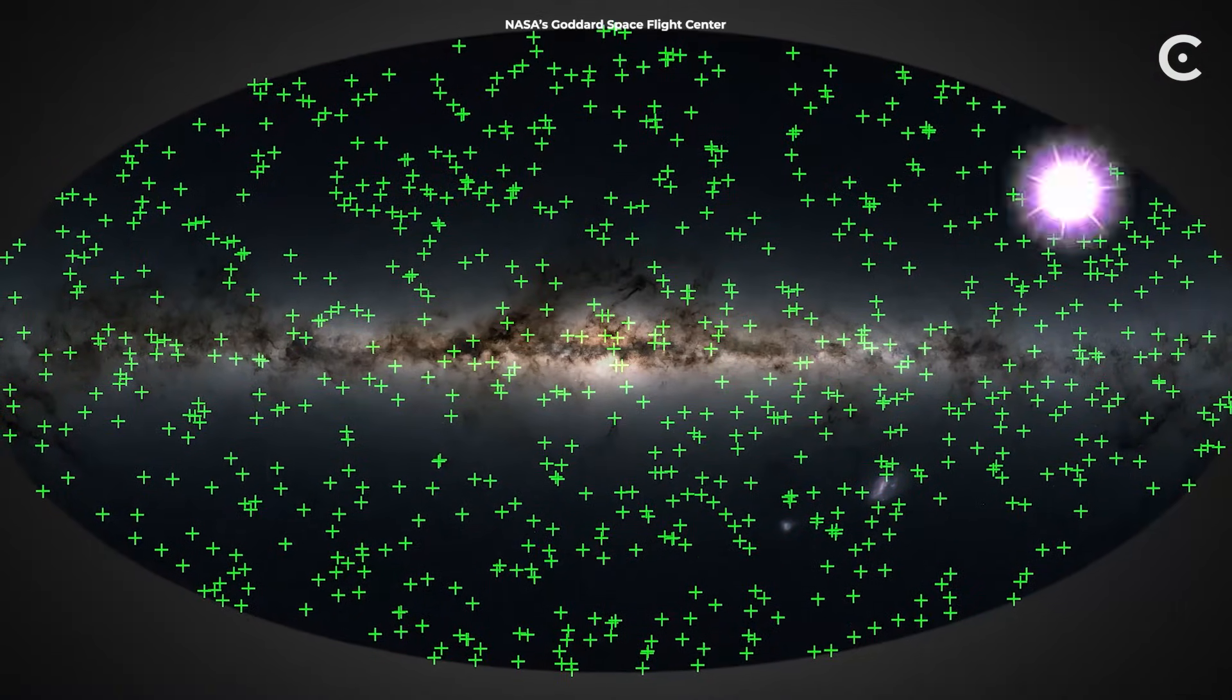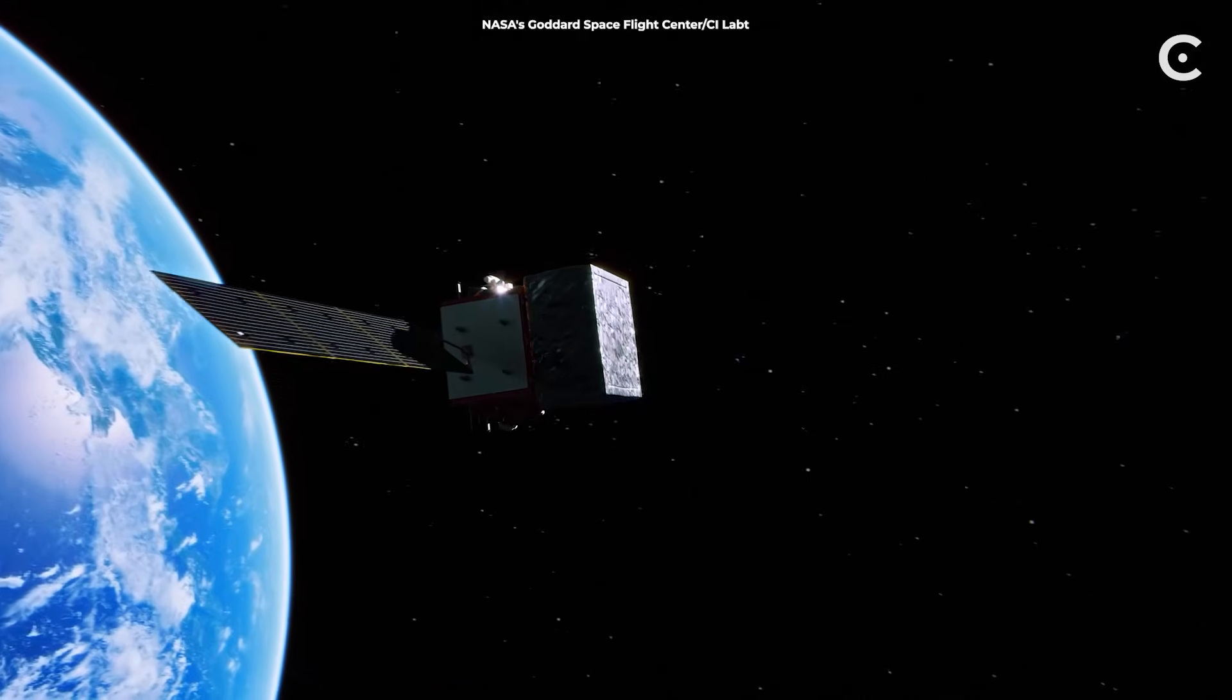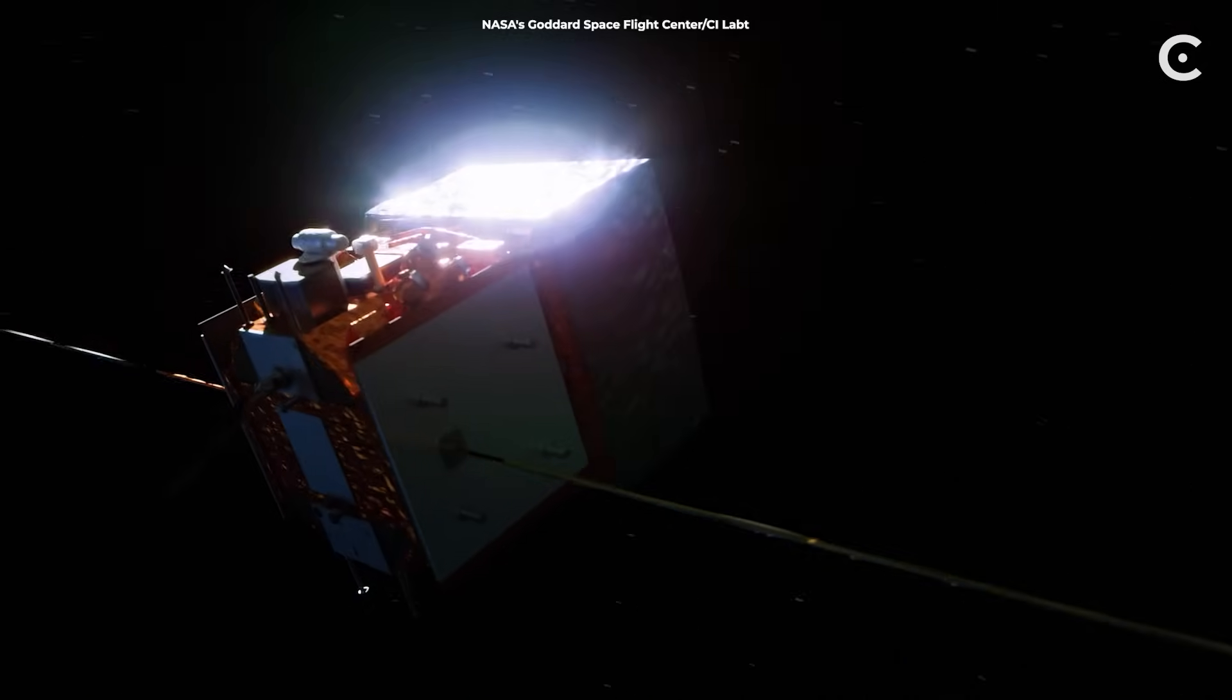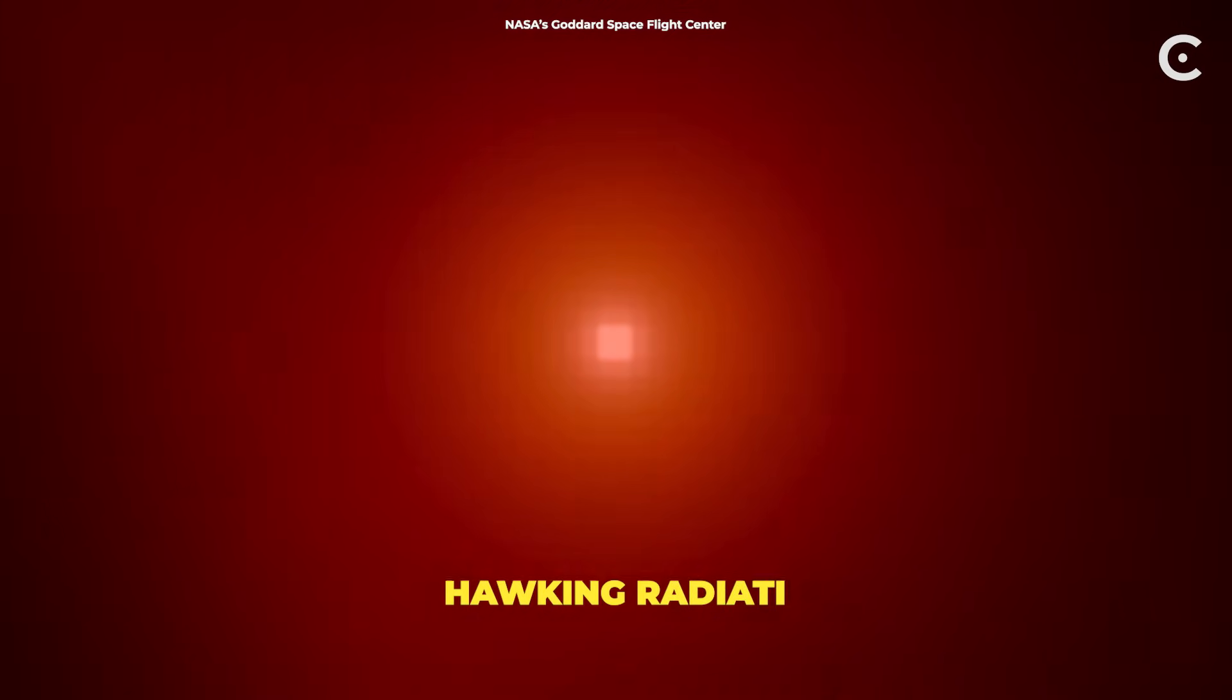And right now, a significant number of them could be hitting their expiration date all around us. Our gamma ray telescopes are already watching. When one explodes, we'll see a flash unlike anything else in space. No afterglow, just pure Hawking radiation.